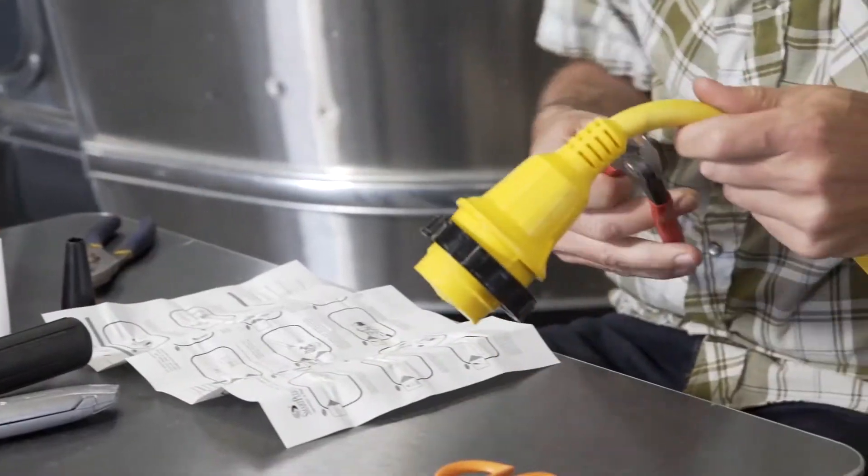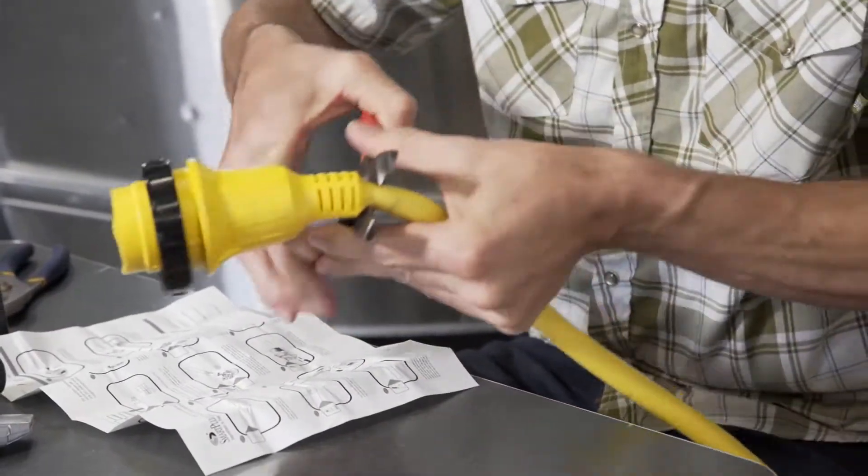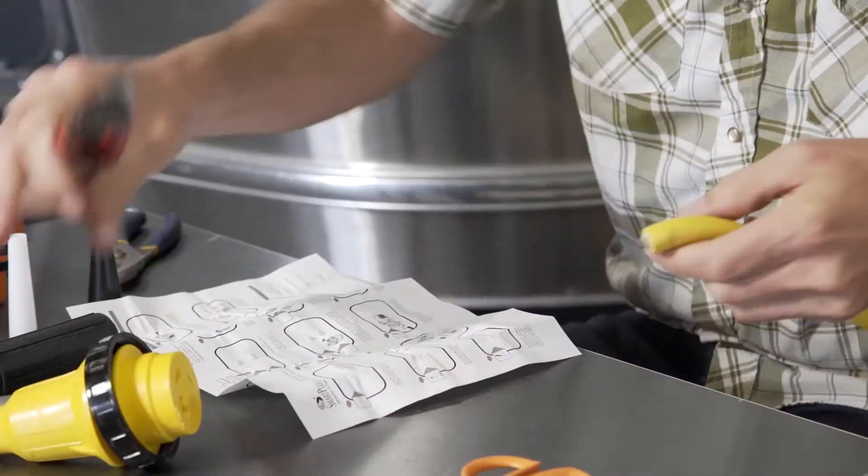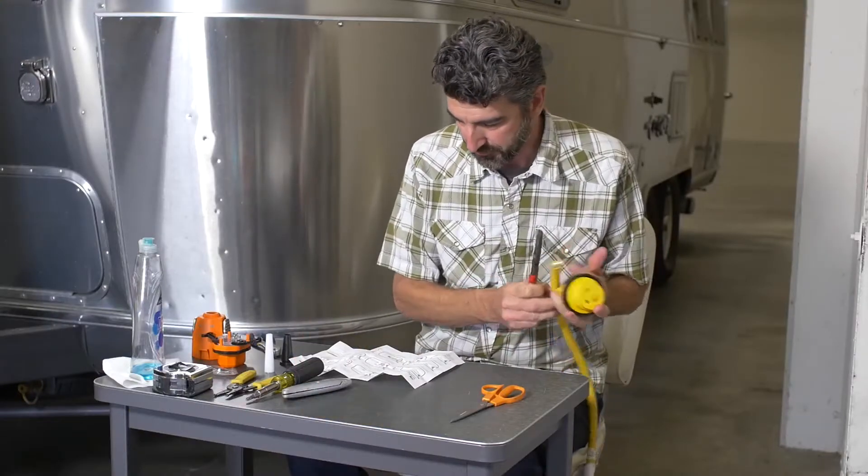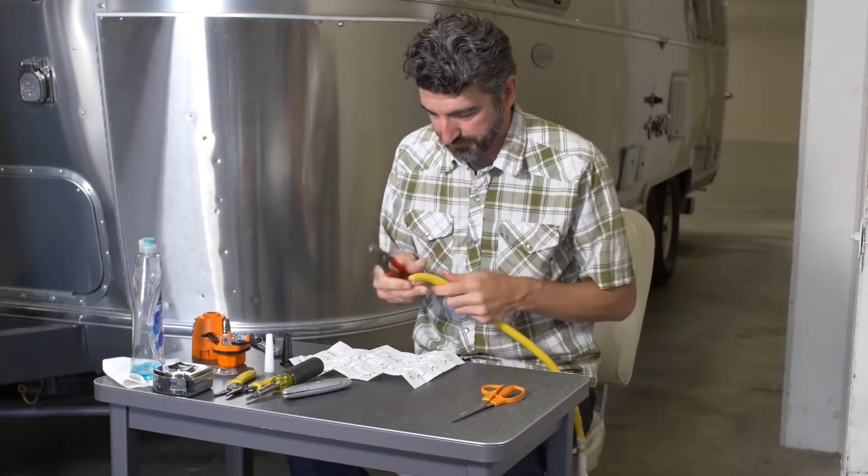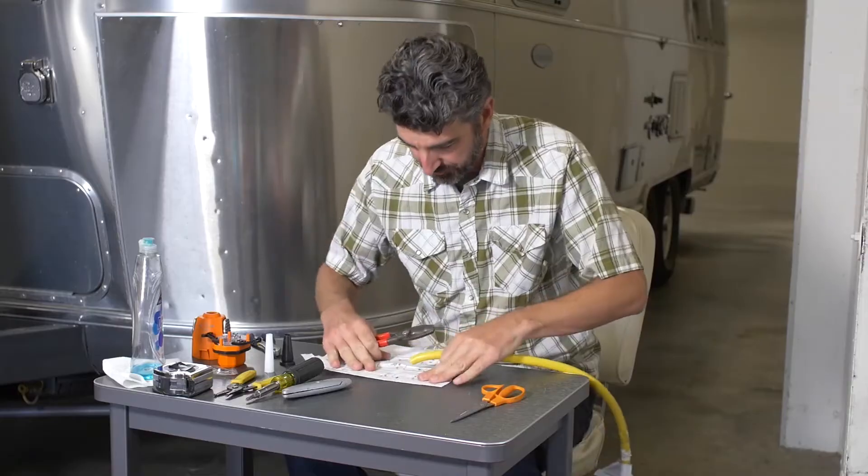Next, cut the female cord end from your existing 30 amp, 125 volt cord set. Inspect the copper wires for corrosion and cut back more cord if necessary to reach bright copper.